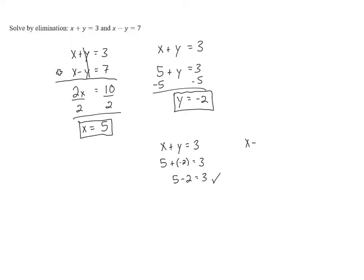If we look at the second equation, x minus y equals 7, and substitute in the values that we got, we have 5 minus negative 2 equals 7. And since 5 minus negative 2 is the same as 5 plus 2, this becomes 5 plus 2 equals 7, which is correct. And this verifies that our answer of x equals 5 and y equals negative 2 is the correct answer to this system of equations.